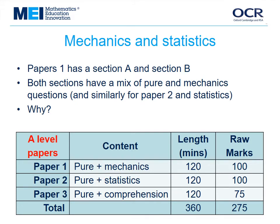One of the features is that the pure questions and the mechanics questions are mixed up on paper one, and the pure and stats questions are mixed up on paper two. There aren't separate sections for mechanics and statistics. There's a good reason for this, and it's to do with the gradient of demand of the papers.